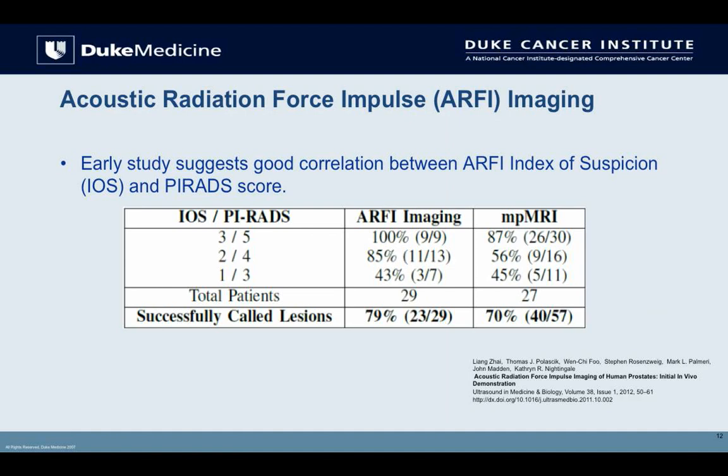In a study we did comparing ARFI to whole-mount radical prostatectomy specimens, each patient underwent both ARFI and multiparametric MRI. For patients with a high PI-RADS score of 5, ARFI detected 100% — 9 of 9 lesions — while MP-MRI detected 87%. For PI-RADS 4, ARFI found 85% of larger lesions versus 56% for MP-MRI. For both modalities, as the index of suspicion drops or lesion size decreases, detection rates also drop off.